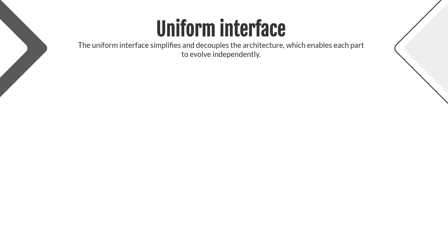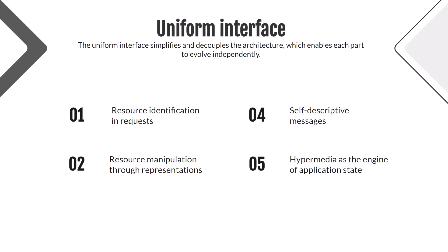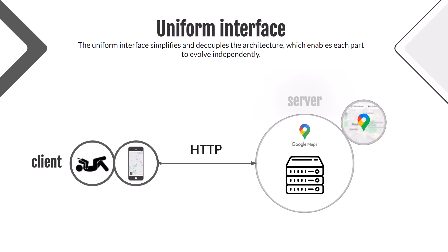The last constraint is a big one: the uniform interface. It simplifies and decouples the architecture, enabling each part to evolve independently. It has four additional constraints, but we are not going to learn those for now. In simple words, there is a client and a server — two separate, independent, unrelated systems — and they need a link between them. Because of that, they have a uniform interface. In our case, it is an HTTP web layer with key verbs to work with resources on the server. We are going to talk about it in detail in one of the next videos.